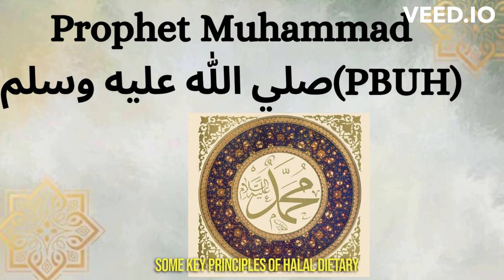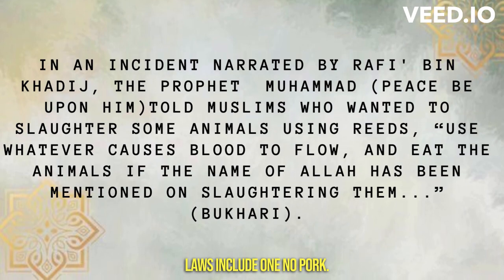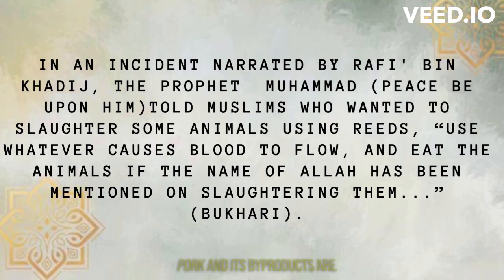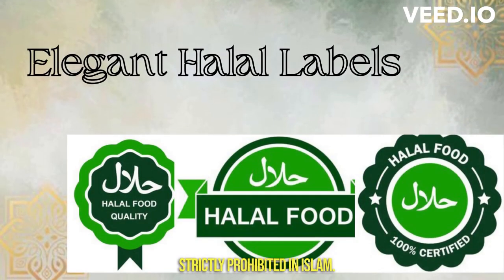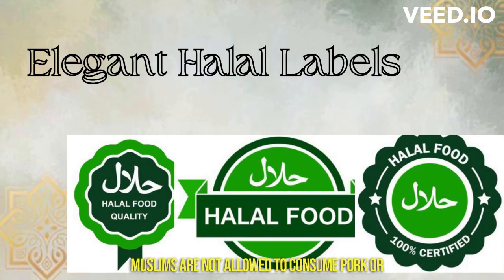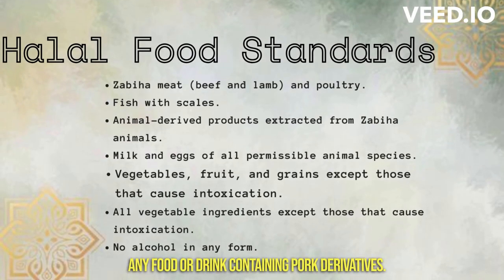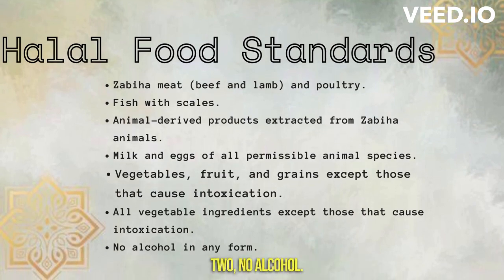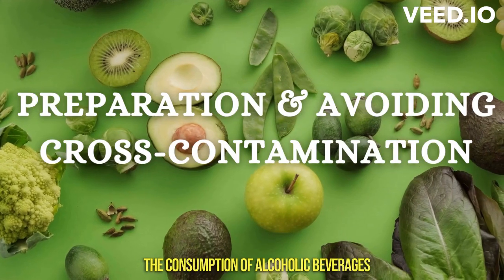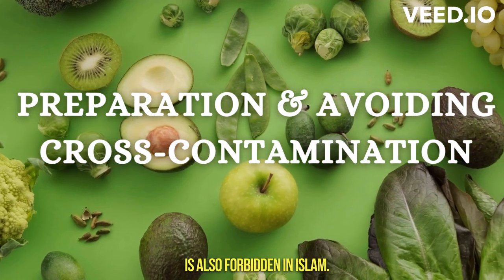Some key principles of halal dietary laws include: 1. No pork — pork and its byproducts are strictly prohibited in Islam. Muslims are not allowed to consume pork or any food or drink containing pork derivatives. 2. No alcohol — the consumption of alcoholic beverages is also forbidden in Islam.